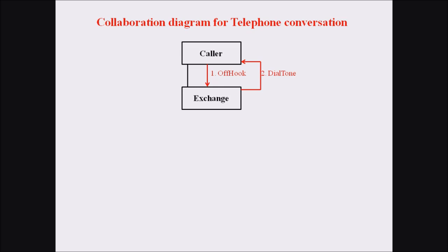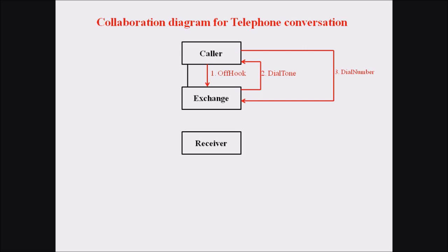The first message in this communication is off hook, and the second message is dial tone. The third message is the caller dialing a particular number. While dialing a number, the exchange object communicates with the receiver object. There is a link between the exchange and receiver, and the communication between them is ring tone — the exchange sends a ring tone towards the receiver end.